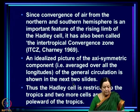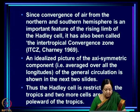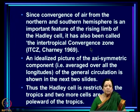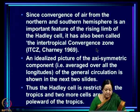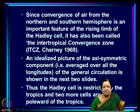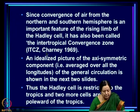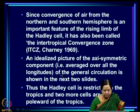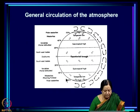Since convergence of air from the northern and southern hemispheres is an important feature of the rising limb of the Hadley cell, it has also been called the Intertropical Convergence Zone — because it is characterized by convergence of air from the two hemispheres. It has been called the ITCZ by Charney. An idealized picture of the axisymmetric component — averaged over all longitudes — of the general circulation looks like this.